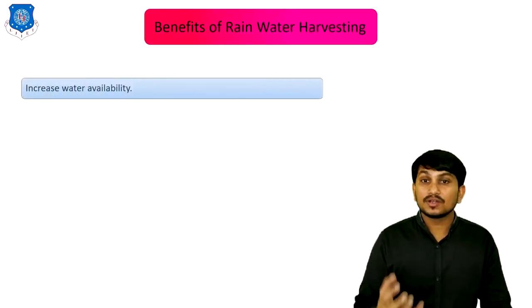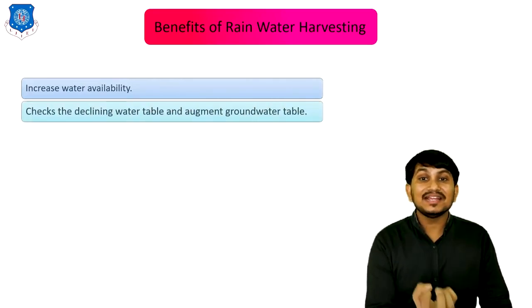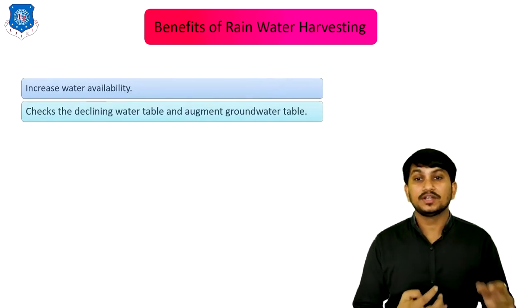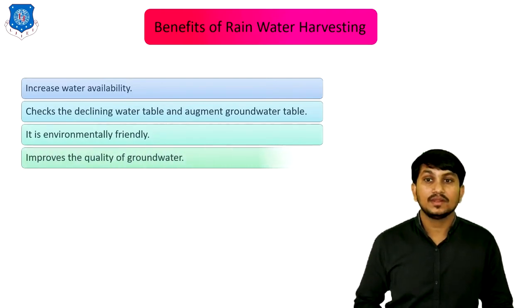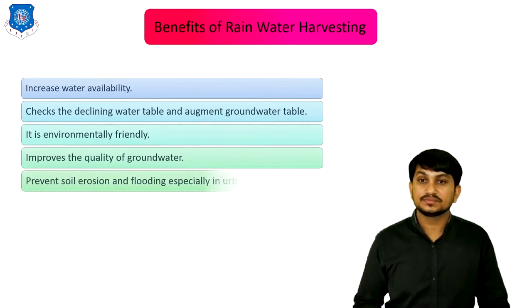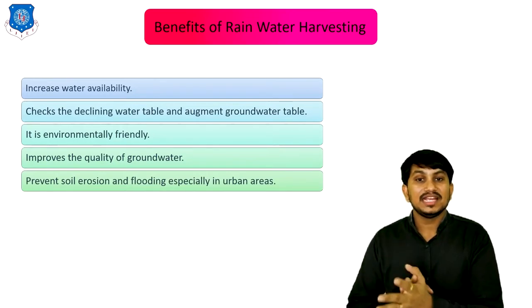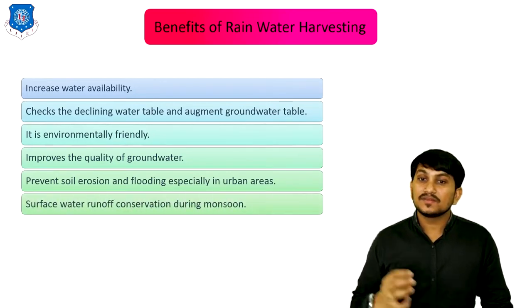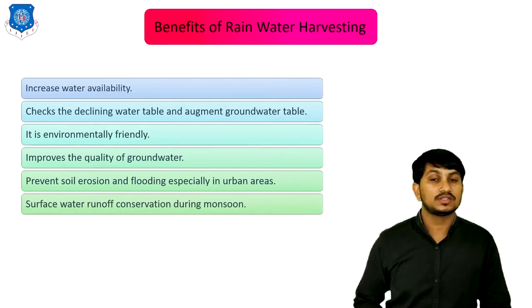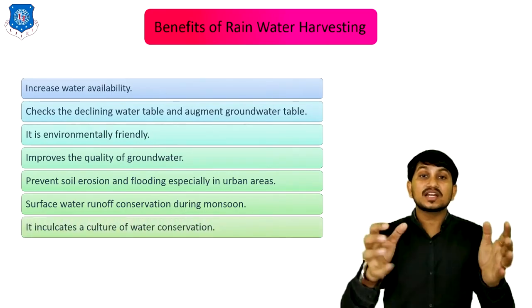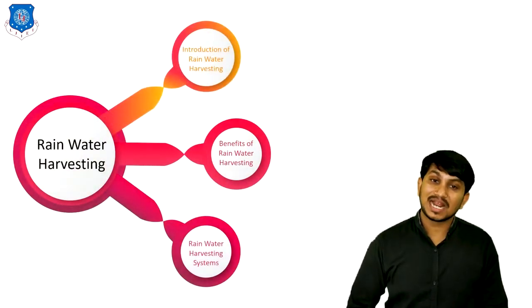The benefits of rainwater harvesting include: it increases water availability to various animals as well as people; it checks the declining water table and augments the groundwater table; it is environmentally friendly; it improves the quality of groundwater; it prevents soil erosion caused by runoff and flooding especially in urban areas; surface water runoff conservation during monsoon is possible with rainwater harvesting; and it increases the culture of water conservation in future generations.